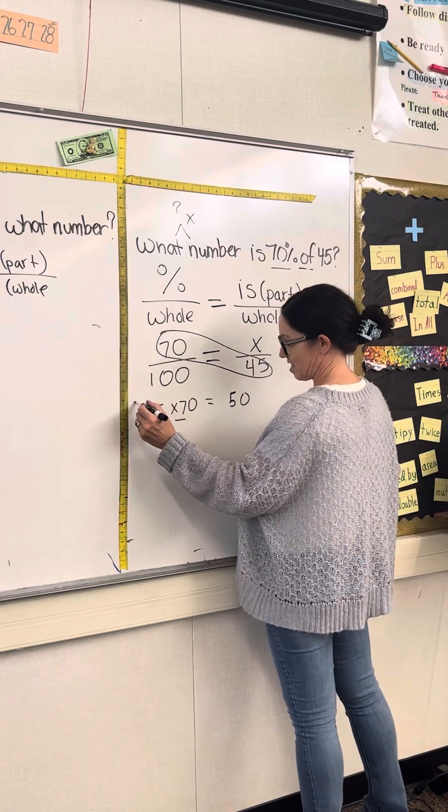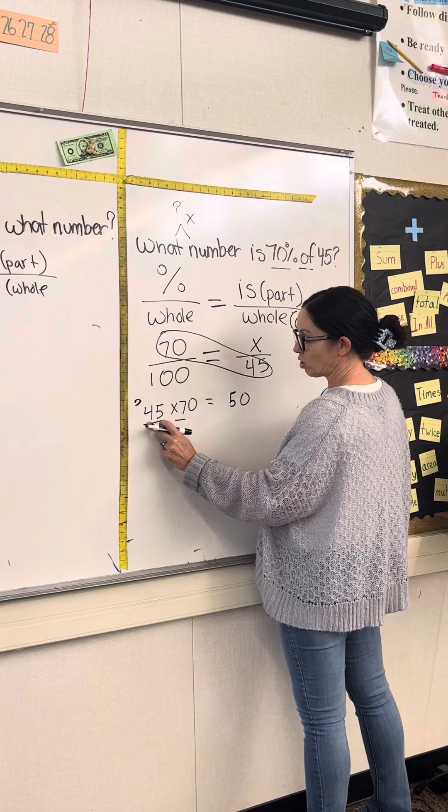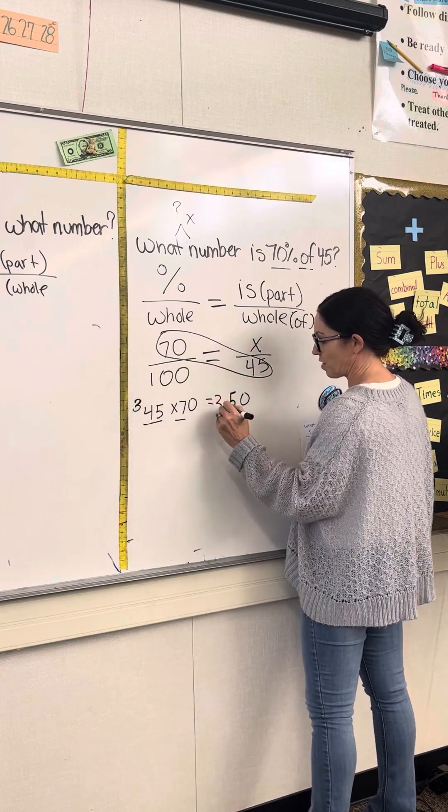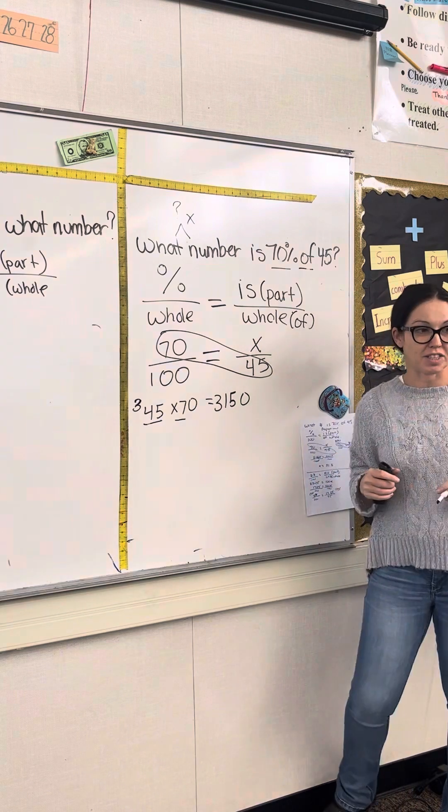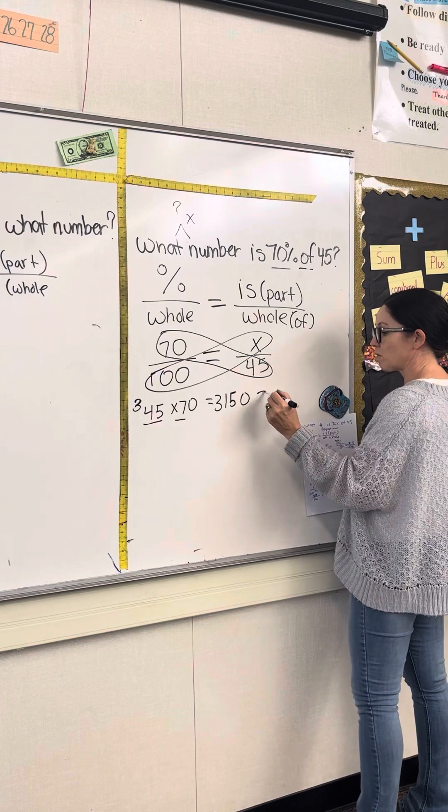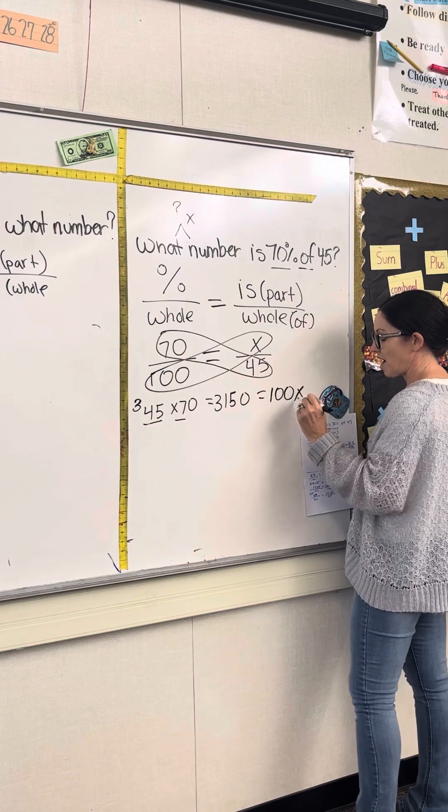And 7 times 4 is 28 plus 3? 3,150. And then we'll multiply the other equals 100x.